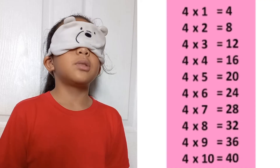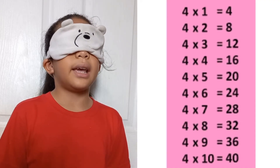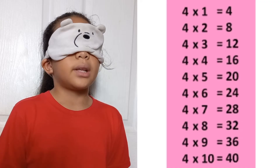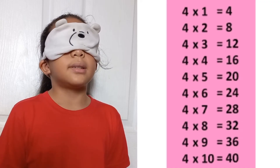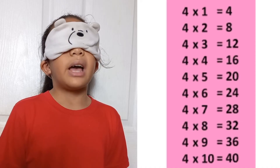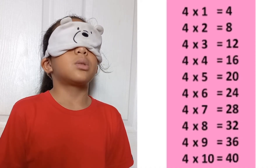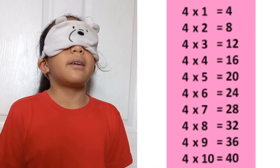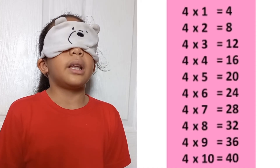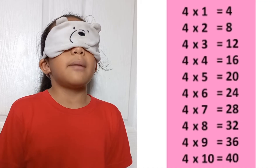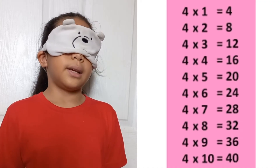4 times 1 equals 4. 4 times 2 equals 8. 4 times 3 equals 12. 4 times 4 equals 16. 4 times 5 equals 20. 4 times 6 equals 24. 4 times 7 equals 28. 4 times 8 equals 32. 4 times 9 equals 36. 4 times 10 equals 40.